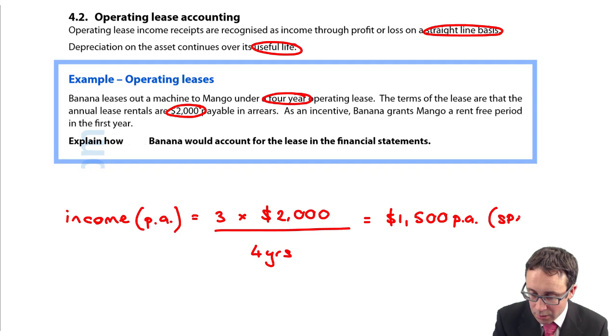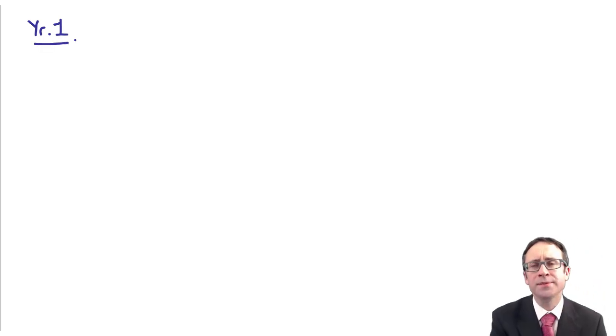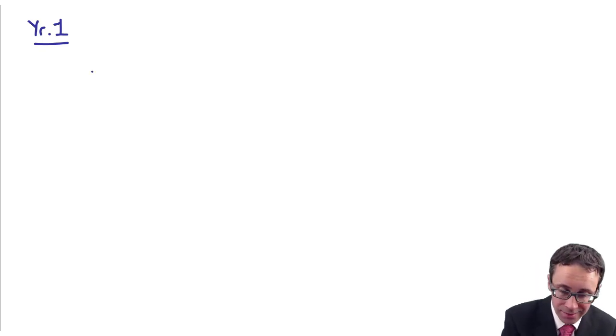Again that goes to the statement of profit or loss, so that is there for your income. Just be careful, from the lessor's perspective we're looking at things now with regards to income. If you want the debits and the credits, if we go through that and look at it for year one, the first year we've leased the asset out rent free so we don't have any cash, so that gives us a bit of an issue with the debit, but for the credit we credit